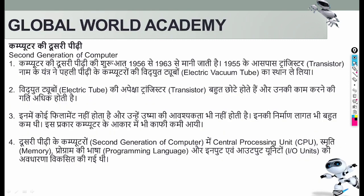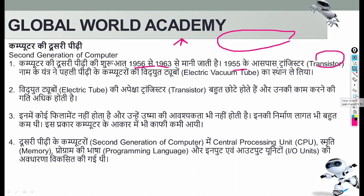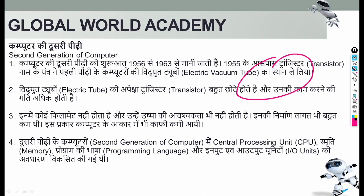The second generation was from 1956 to 1963. The vacuum tube was replaced with the transistor. You can see that compared to the vacuum tube, the transistor is very small — it has three legs. Because of the transistor, the size of the computer was reduced significantly. Where you needed one vacuum tube, you could now use many transistors. The transistor had no filament, generated less heat, and was faster.